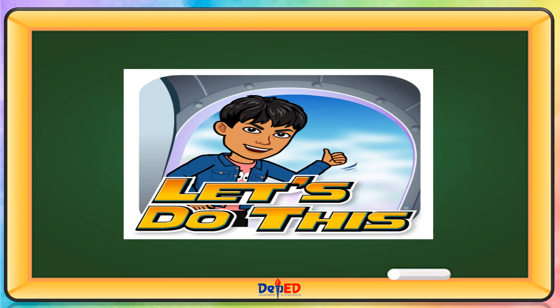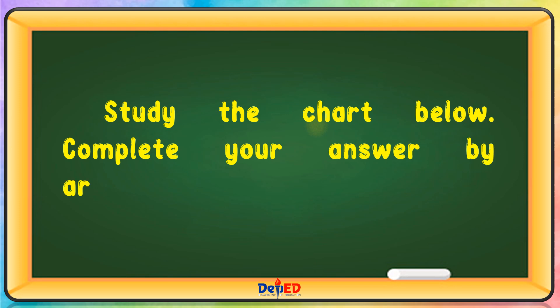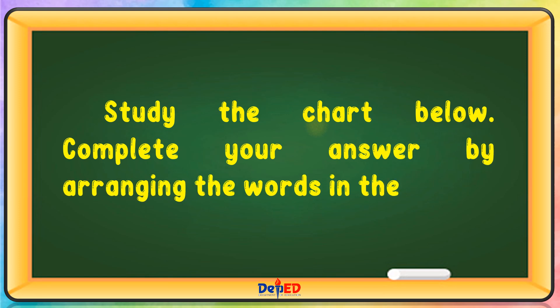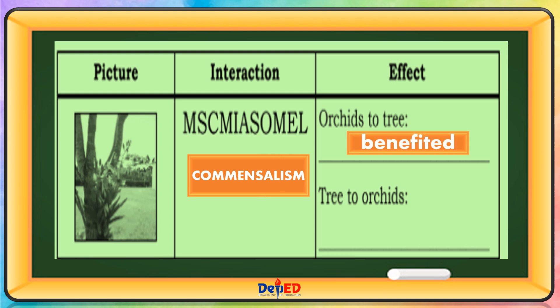Let's do this! Study the chart below. Complete your answer by arranging the words in the second column. The interaction is Commensalism. Effect: Orchid to tree — Benefited. Tree to orchid — Not benefited nor harmed.